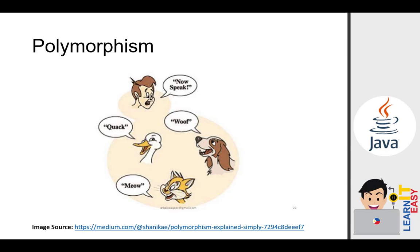Of course you might say that it's obviously different because the sound of a duck is different from the sound of a dog and a cat. But if that's the case, then you already get the general idea of polymorphism. When the human commanded the animals to speak, the duck says squawk, the dog says woof, and the cat says meow — different responses, but only one command was used. That is exactly how polymorphism works.